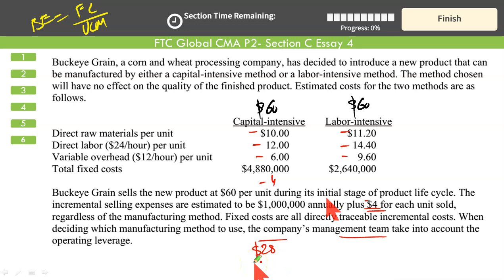For labor intensive: 60 less 11.20 less 14.4 less 9.6 less 4 gives you $20.8. That is the unit contribution margin for the labor intensive method.